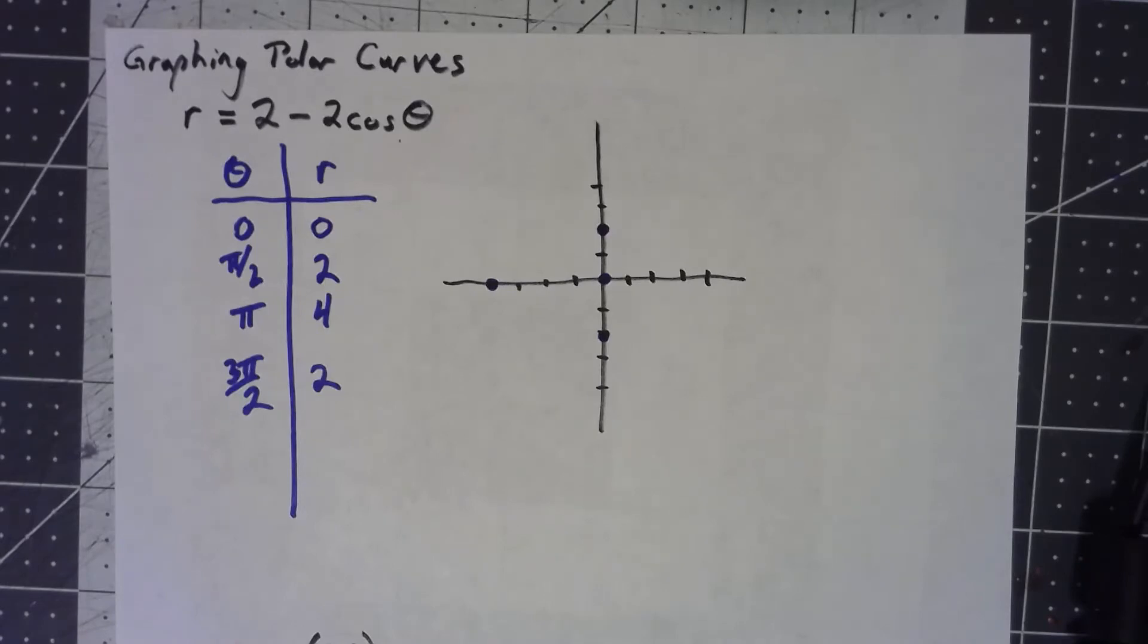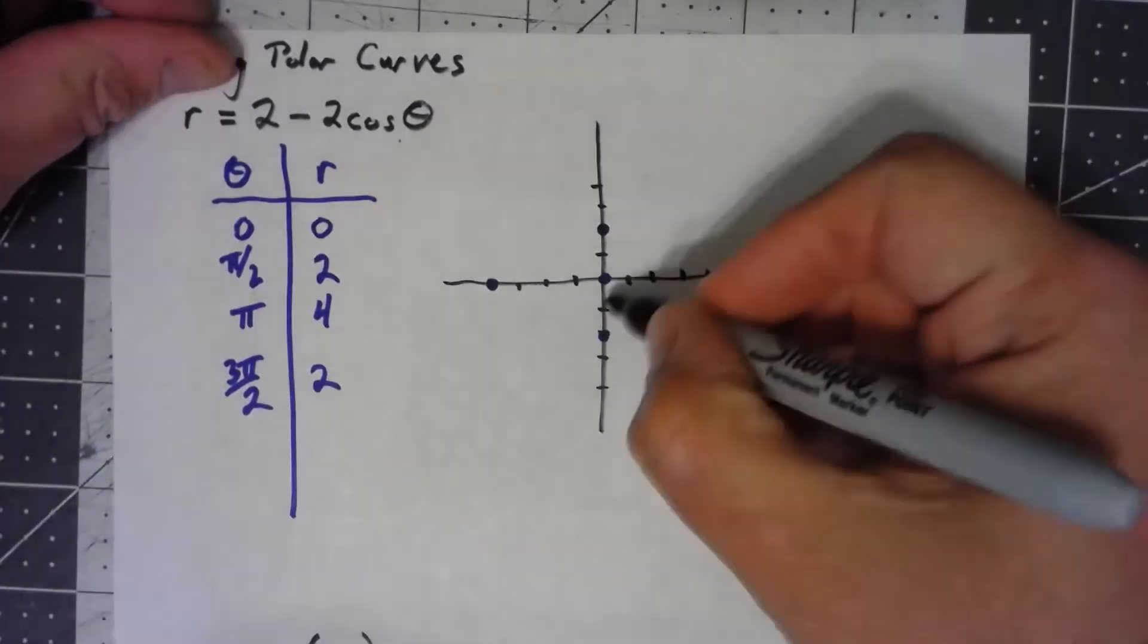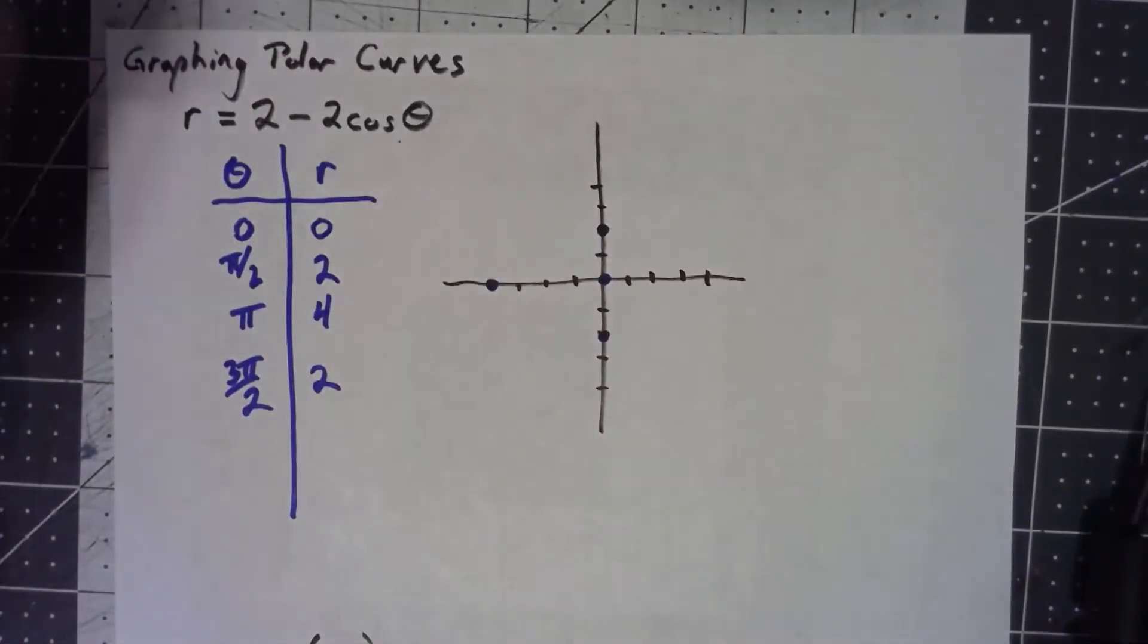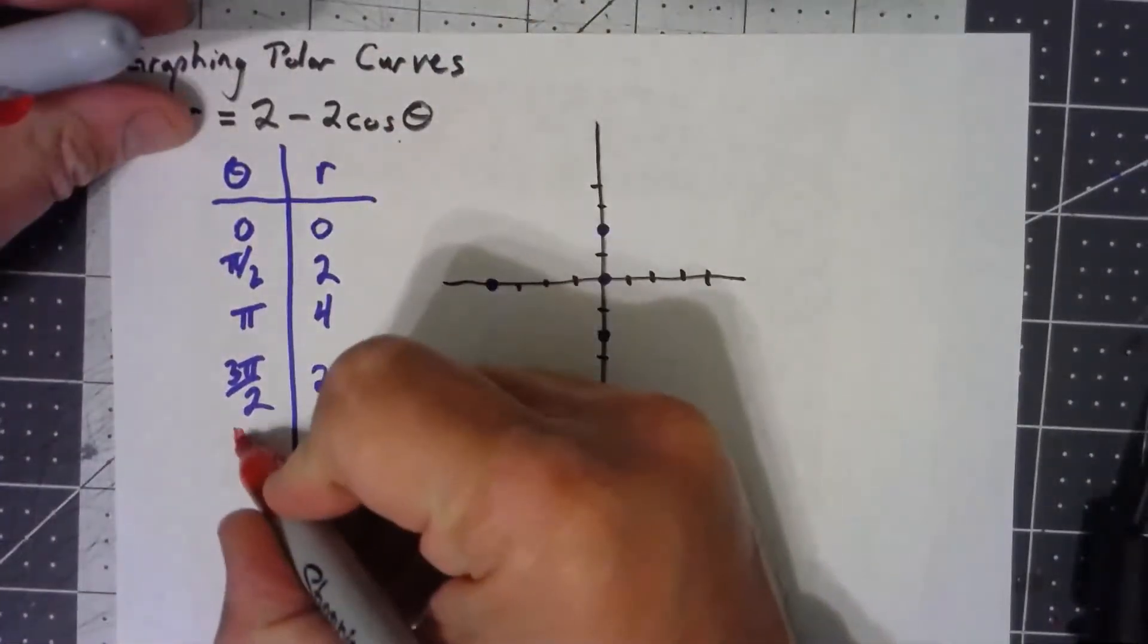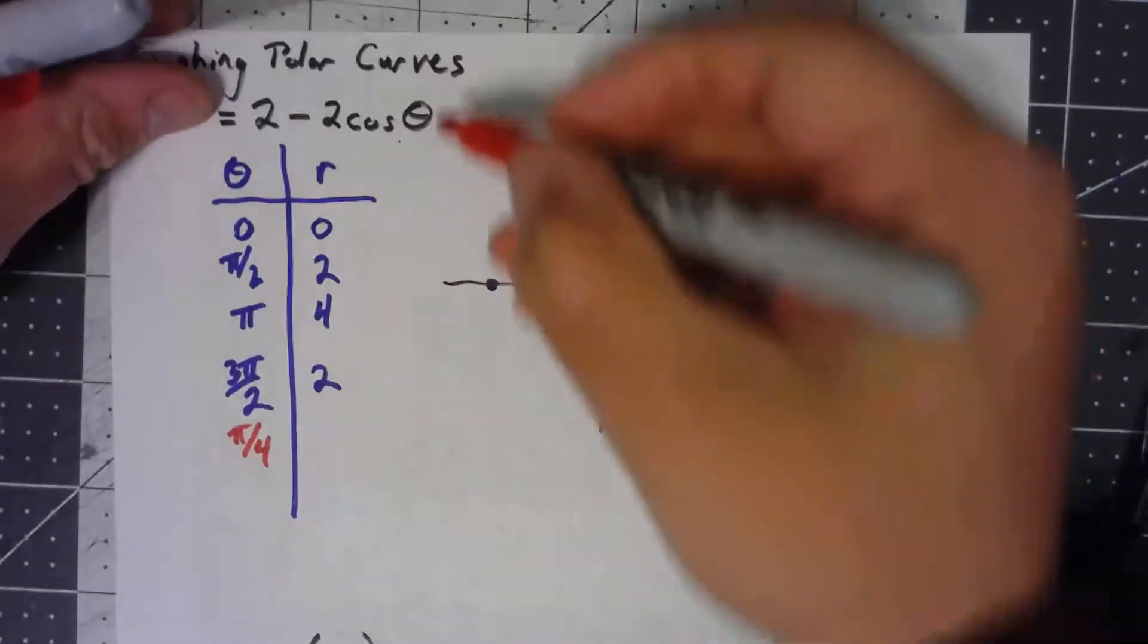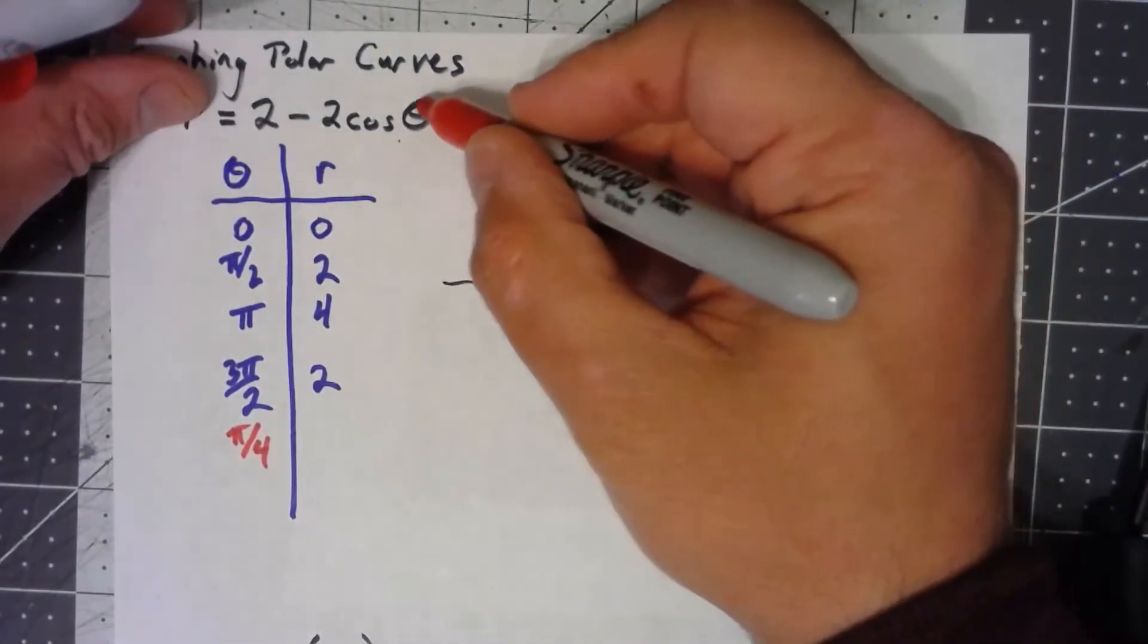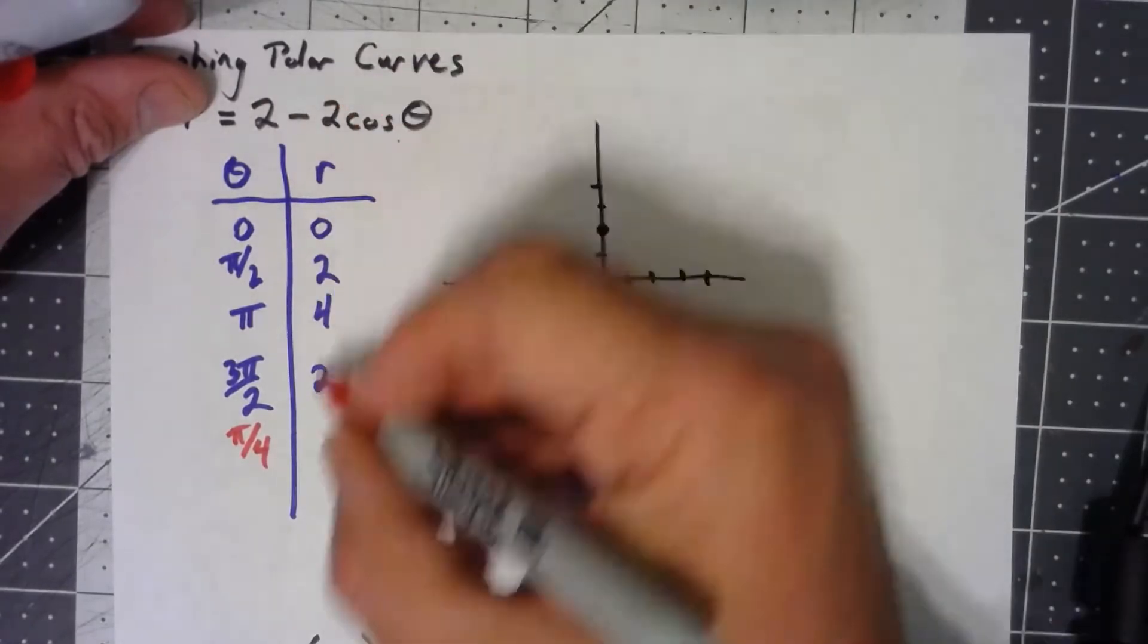But honestly, that's not enough to see what the graph is doing. It's a good idea to get some points in between. So I'm going to go ahead, and let's do every halfway through every quadrant here. So let's do pi over 4. Cosine of pi over 4 is root 2 over 2, so 2 minus root 2.